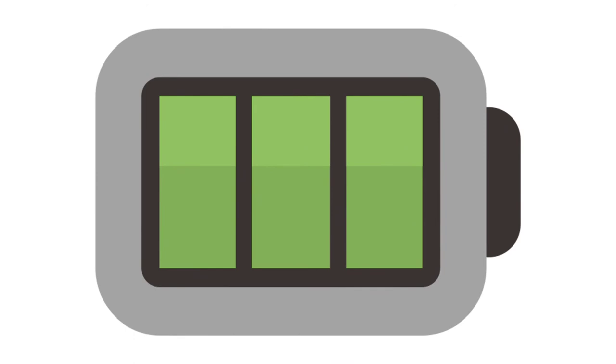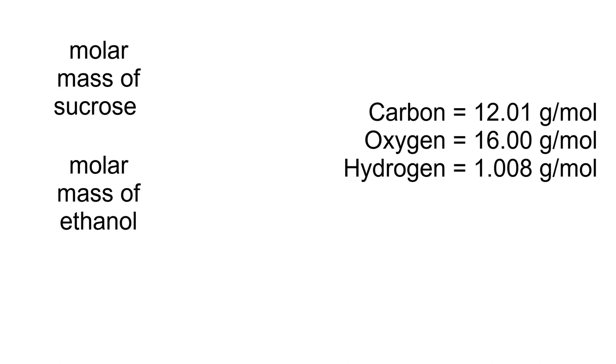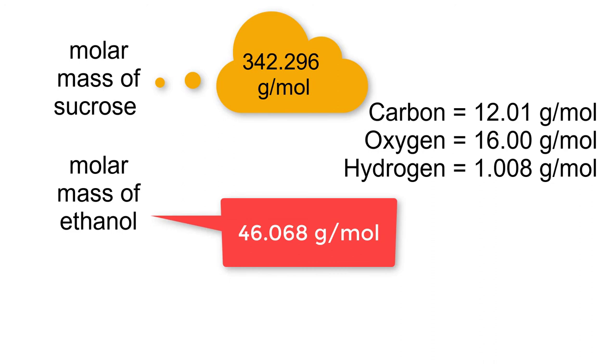The last steps are to plug in the numbers and do the math. However, there is a calculation we need to do before we can plug our numbers in, and that is calculate the molar masses of sucrose and of ethanol. The numbers I will be using are 12.01 g/mol for carbon, 16.00 g/mol for oxygen, and 1.008 g/mol for hydrogen. The molar mass of sucrose is 342.296 g/mol, and 46.068 g/mol for ethanol.